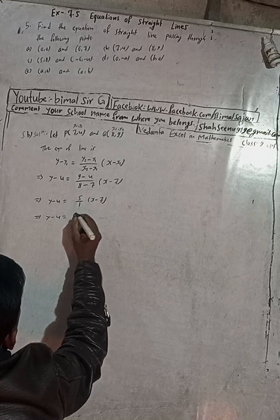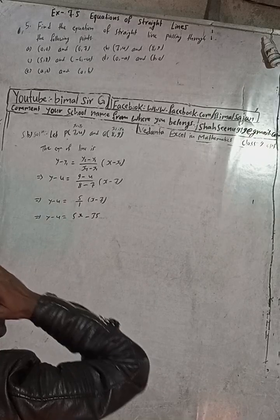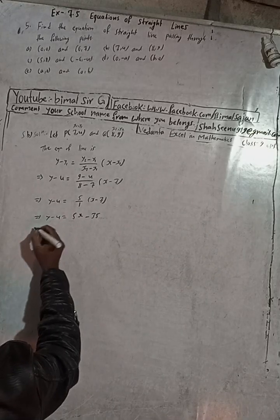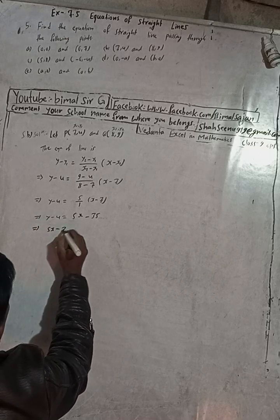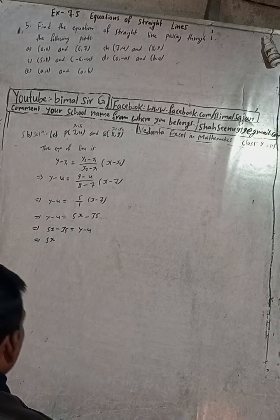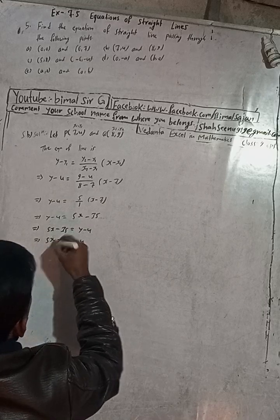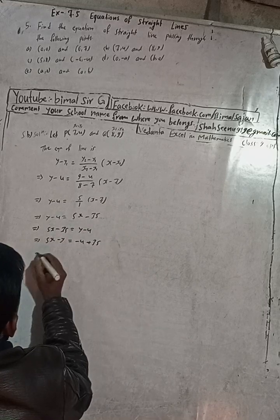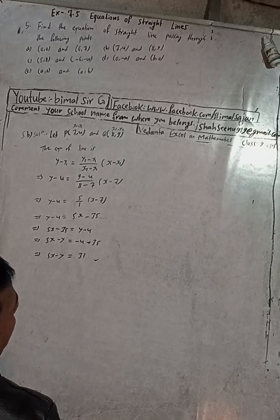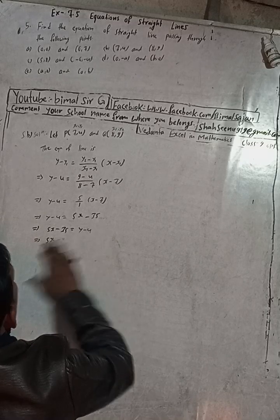Now shifting terms: 5x minus 35 equals y minus 4. Rearranging: 5x minus y equals minus 4 plus 35, which is 31. So the required equation for 5b is 5x minus y equals 31.